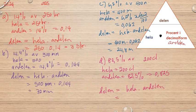So delen equals hela multiplied with andelen in decimal form. Hela is 200 multiplied by 0.825. So we get 200 multiplied by 0.825, which is 165 centiliters.